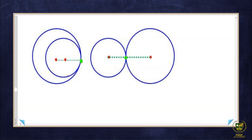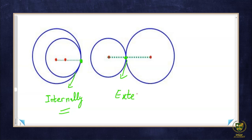Now we can see the two cases I mentioned. In the first case, the circles are touching internally — our figure will look like this. In the second case, we have to draw a tangent at the point of contact where the circles touch externally. To construct, we use the point of contact to draw the tangents, and we already know the key concept: the tangent at the point of contact is perpendicular.